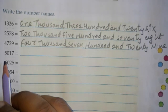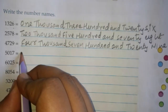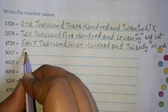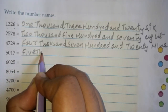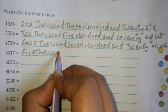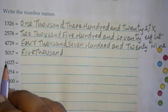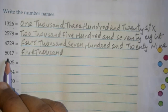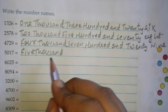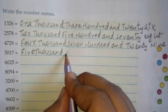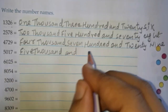Next is 5,017. 5 is on the thousands place, so five thousand. There is no number on the hundreds place, so we leave it and go directly to the tens and ones: seventeen. So it is five thousand and seventeen.